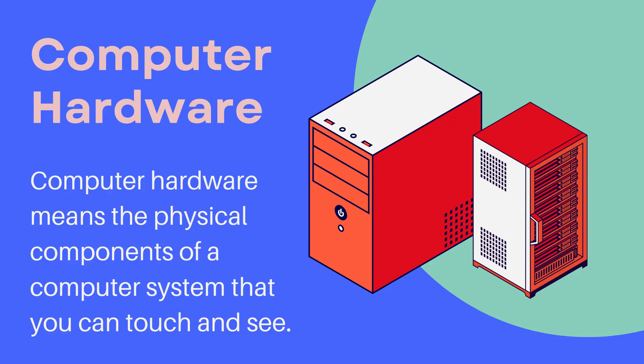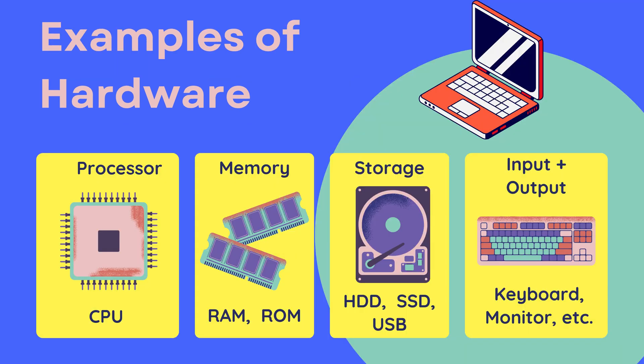Hardware means the physical components of a computer that you can touch and see. Some examples of hardware devices are as follows. The CPU, or central processing unit, is often called the brain of the computer — it processes instructions and manages tasks.